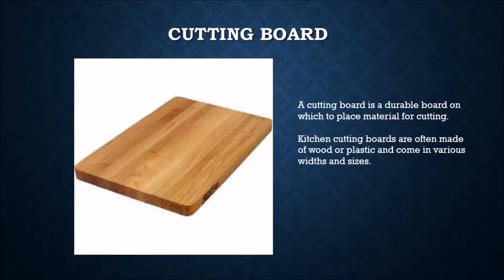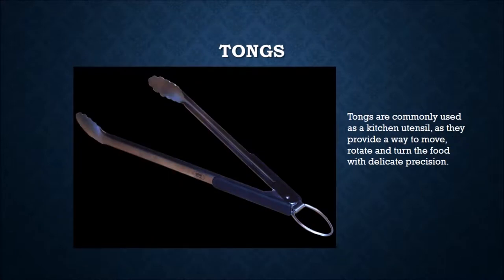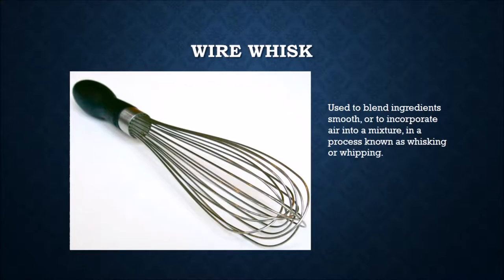A cutting board is a durable board on which to place material for cutting. Kitchen cutting boards are often made of wood or plastic and come in various widths and sizes. Tongs are commonly used as a kitchen utensil as they provide a way to move, rotate, and turn food with delicate precision.